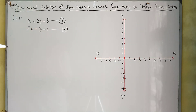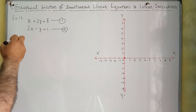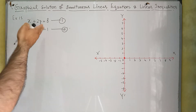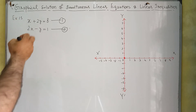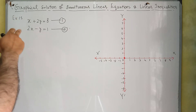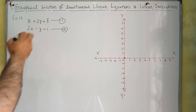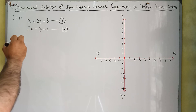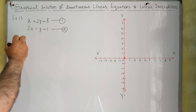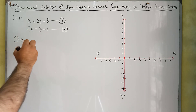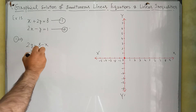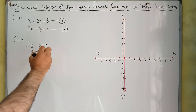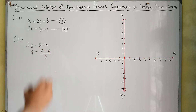This is a linear equation. If we want to draw a graph of this equation, we have to make Y or X the subject. So I'm going to make Y the subject of equation 1, which will become Y is equal to 8 minus X, divided by 2.